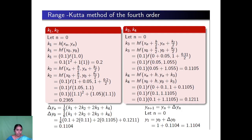Now moving to the second subdivision: Runge-Kutta method of fourth order. In fourth order, we calculate k1, k2, k3 and k4, then delta y0, and finally y1. Let n equal to 0. k1 equals 0.2, as before. For k2, using the formula h into f of xn plus h by 2, yn plus k1 by 2, and substituting the values, we obtain k2 equals 0.2365. Similarly, substituting k2, h, x0, y0, we obtain k3. Next, k4 equals h into f of xn plus h, yn plus k3. Substituting k3, we obtain k4 equals 0.1211.